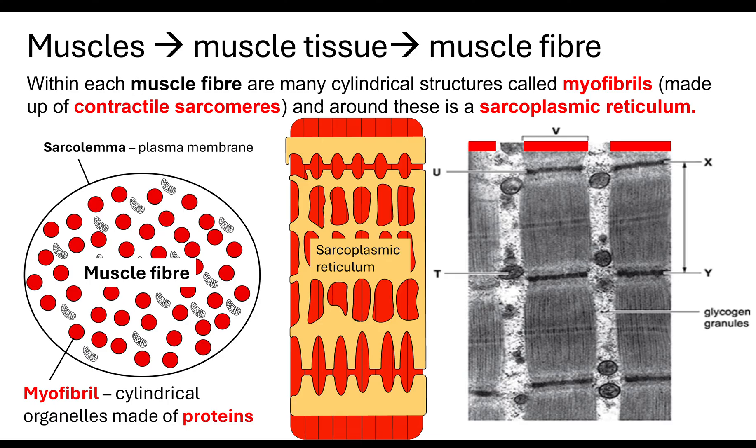Insulin ensures that our blood sugar levels are controlled by signalling to muscle cells to remove excess glucose and to store them in the form of glycogen inside the cell.